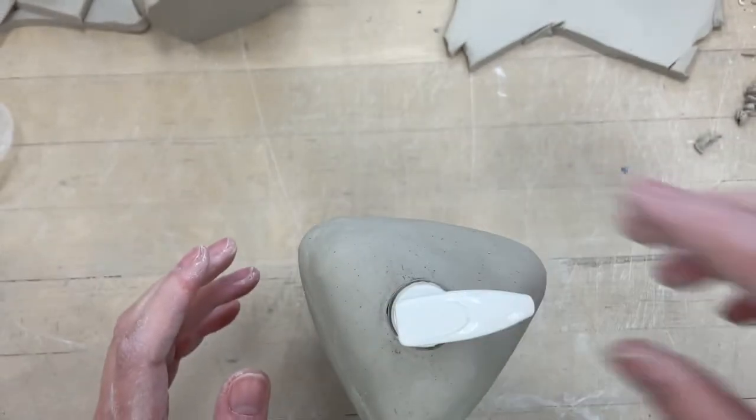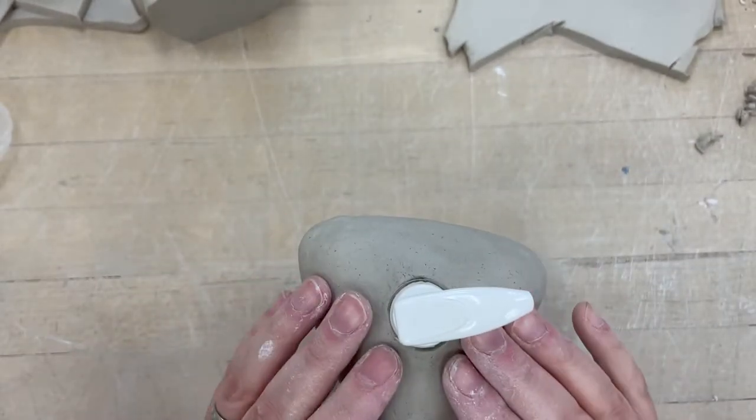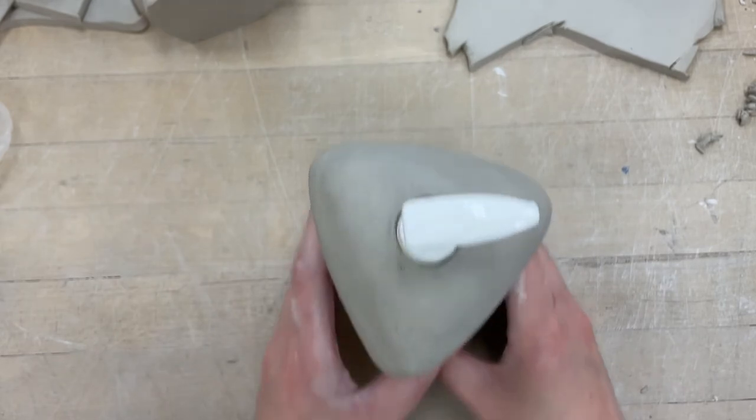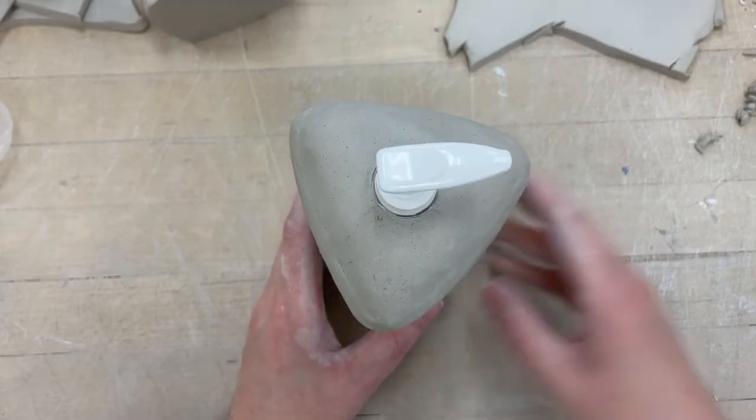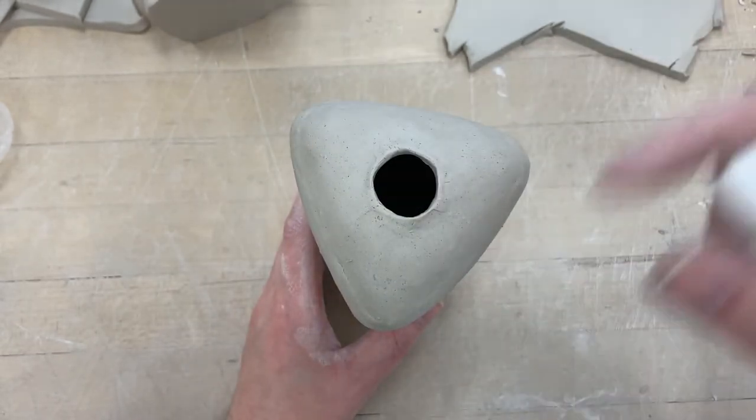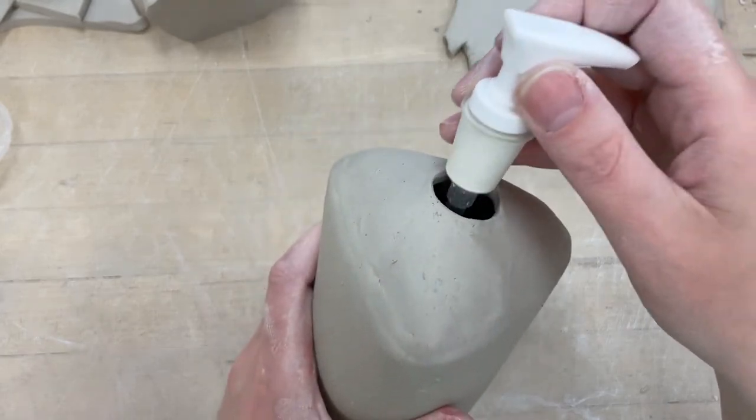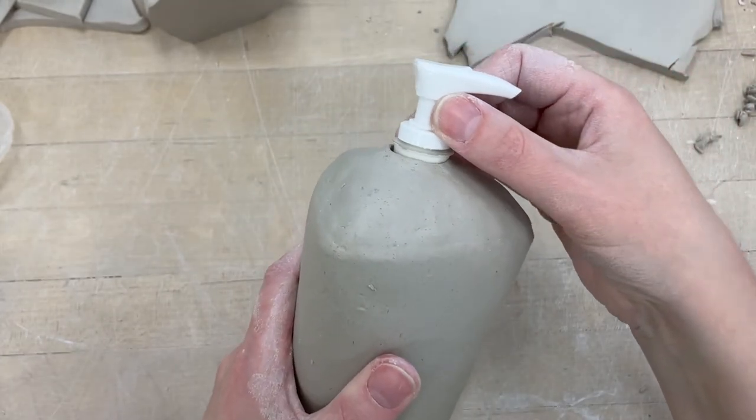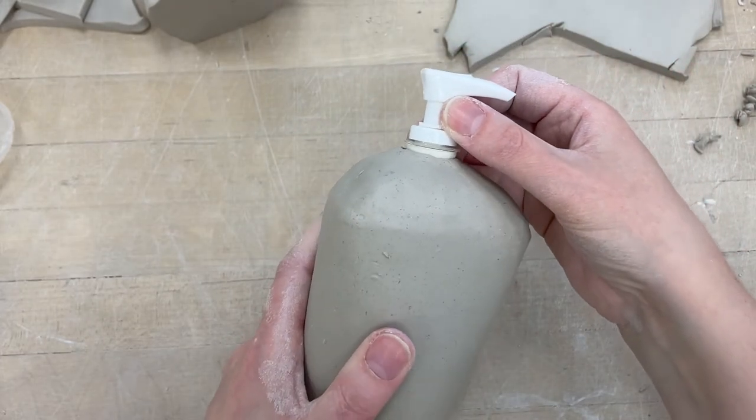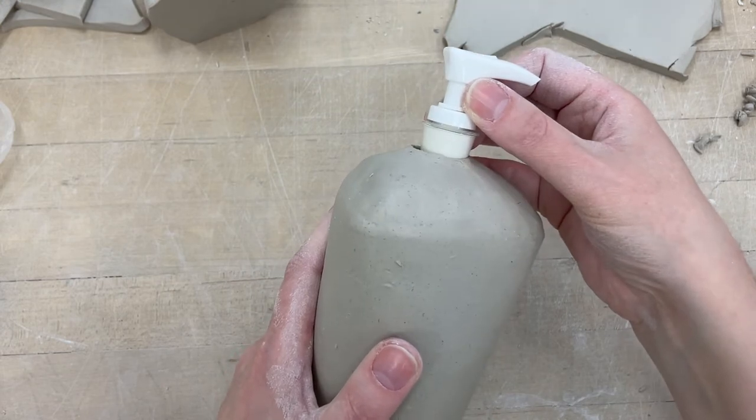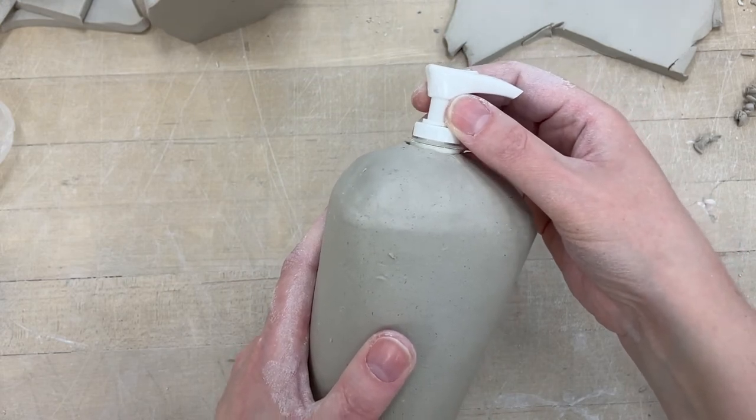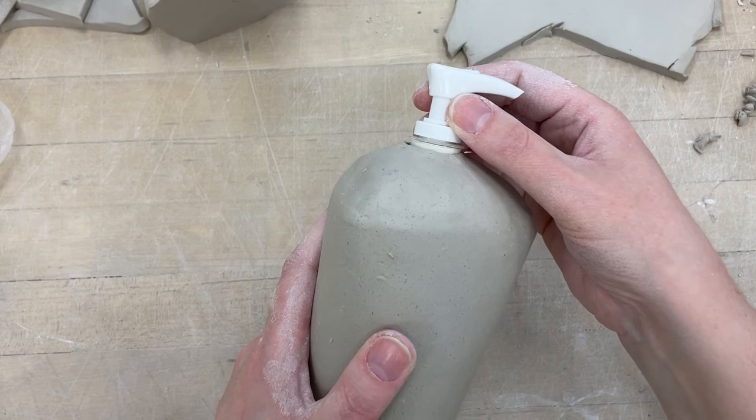So you're just making sure that your hole really matches this really closely. Once it shrinks and has been glaze-fired and everything, when you push this in, it should sit fairly close to that. If it's a little bit up too high, that's okay, but it'll be about like that.